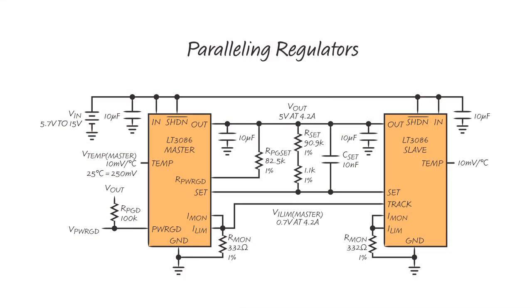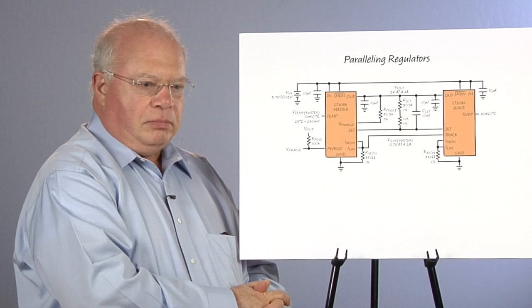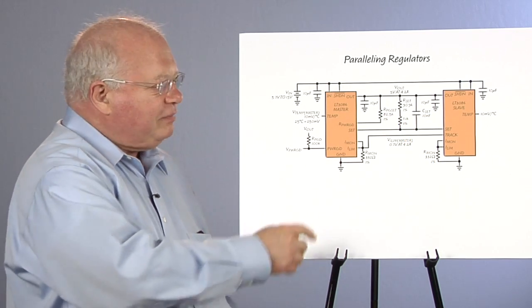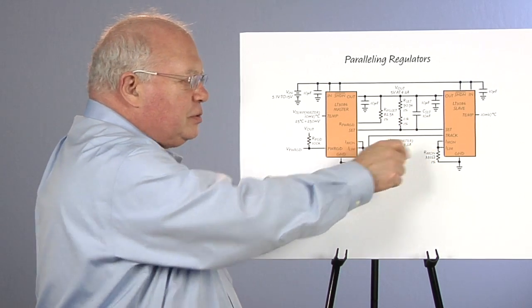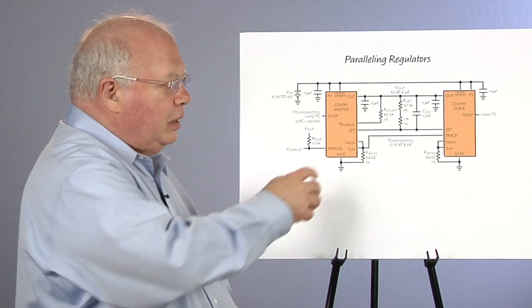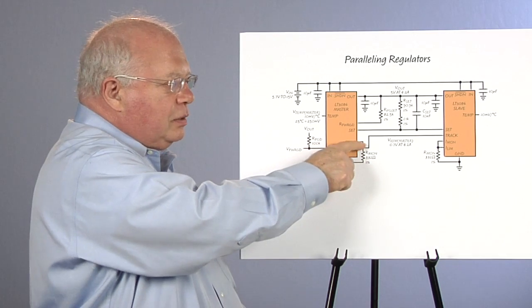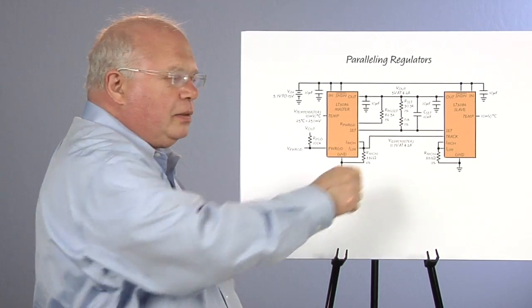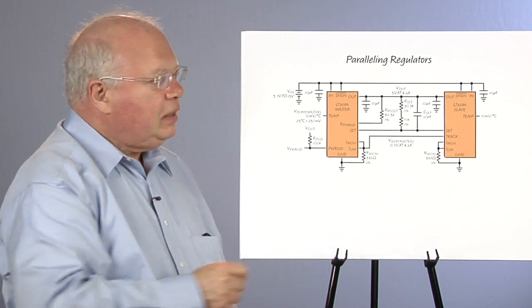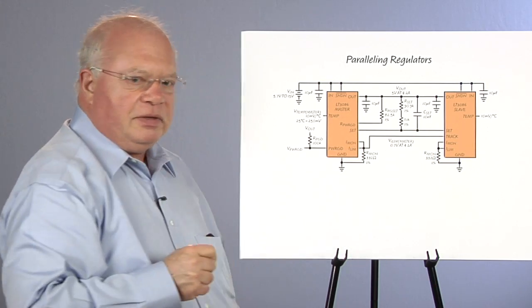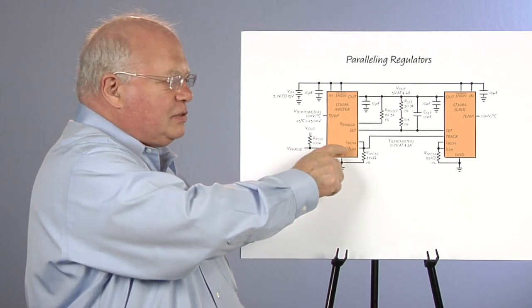These devices are easy to parallel. They use a master-slave method of paralleling where the slave is forced to carry the same current as the master. To get this system to work, we have to have matched resistors on our current monitor point. And we take our current monitor point here on our master. We tie it to the track pin on the slave. This forces the slave to operate at the same current as the master.